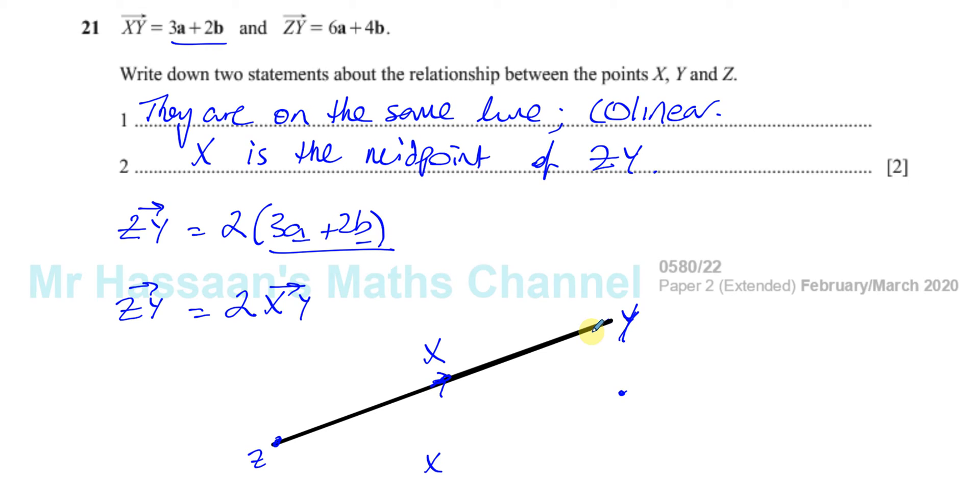So those are two statements we can derive from the fact that these two vectors are not only in the same direction, which could mean either they're parallel or they're on the same line. How do we know if they're in the same line? Well, if they pass through the same point, which is Y, and they're in the same direction, they must be on the same line. And because Z to Y is twice as long as X to Y, X must be the midpoint of Z to Y.